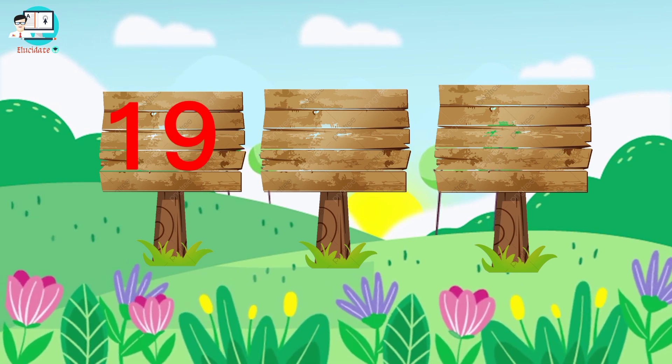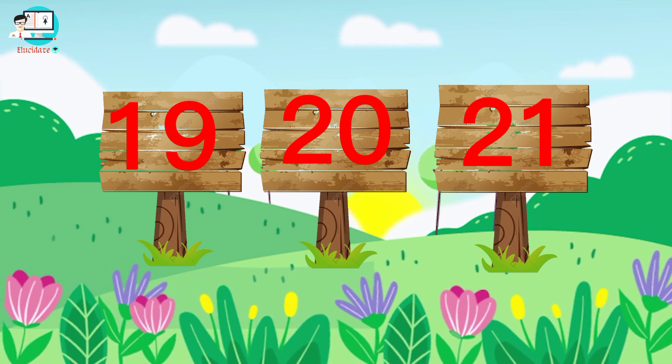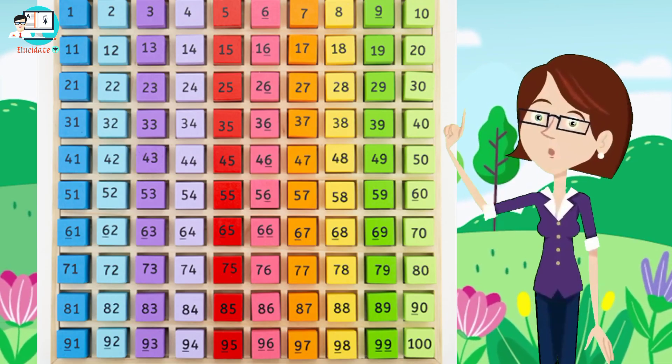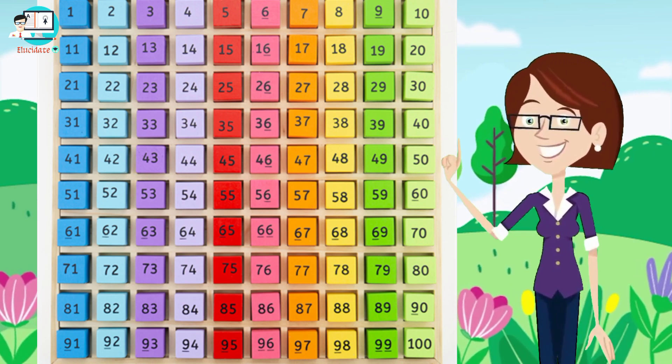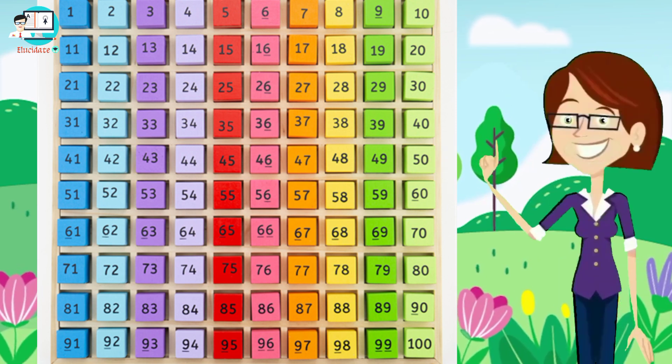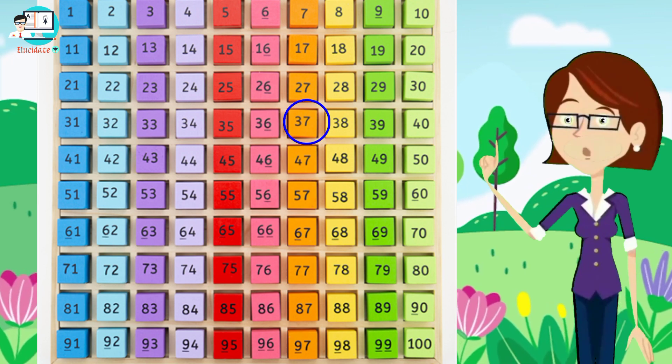Here we have a hundred square grid, and we are going to choose from here some random numbers. So we are selecting from here number 37, then number 60, and then last number 22. Let's arrange them into ascending order.